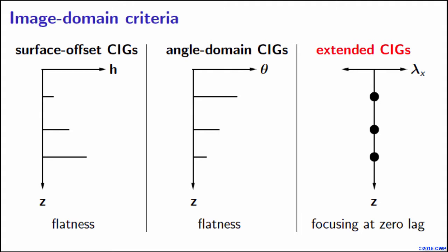In the image domain we have the following options. To formulate our objective function we can rely on the flatness of surface offset or angle domain common image gathers, or alternatively we can rely on the focusing of energy in the extended domain. This is something I'd like to discuss today.